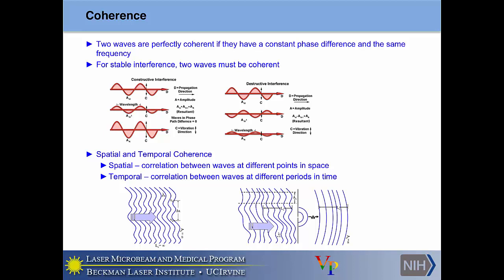Spatial coherence is a measure of the correlation of waves between two points of space. Temporal coherence is a measure of the correlation between a wave and a copy of itself with different time delays. On the bottom left, you can see a wavefront with infinite spatial and temporal coherence — infinite spatial coherence because the wavefront doesn't change as it propagates, and infinite temporal coherence because the phase relationship between each wave is constant. On the right, you can see a wavefront with poor spatial and temporal coherence, but once it reaches a slit, you get high spatial coherence — but still poor temporal coherence.